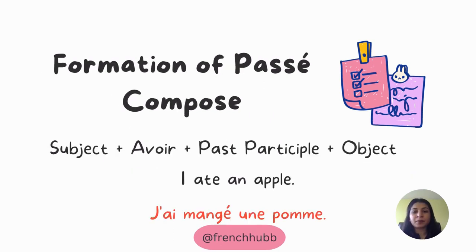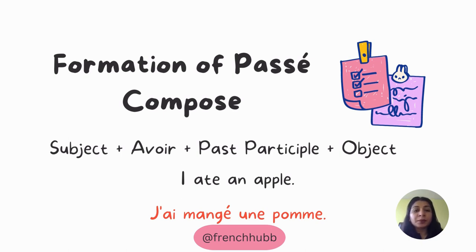First of all, let's understand the formation of passé composé. It is: subject plus the conjugated form of avoir, plus the past participle of any verb, plus the object. For example, 'I ate an apple' is 'j'ai mangé une pomme'. Note that we are only talking about verbs not included in the house verbs — excluding those, we cover all verbs.